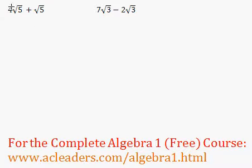Here we have 4 root 5 plus root 5. Right away we can add these because we have the same radical. We have root 5 and root 5. If they were different numbers inside the radical, we would not be able to add them. But they're both 5's, so that's okay.